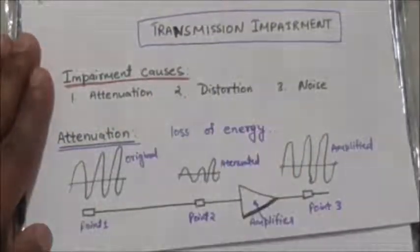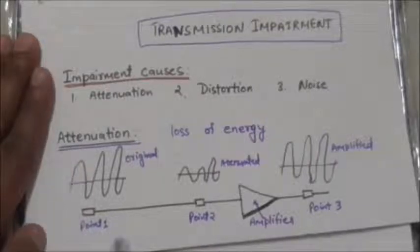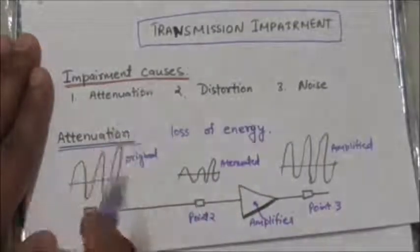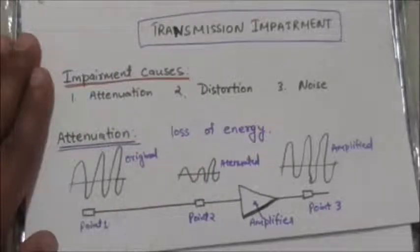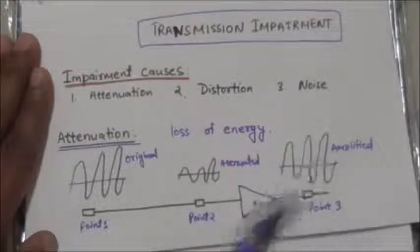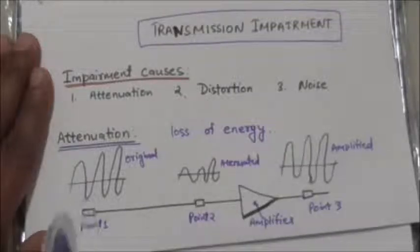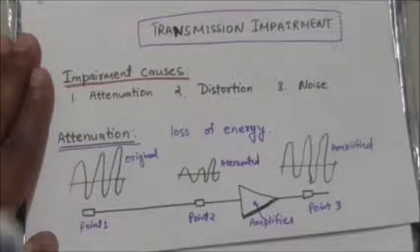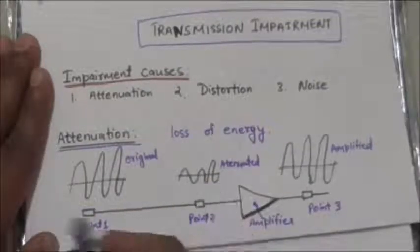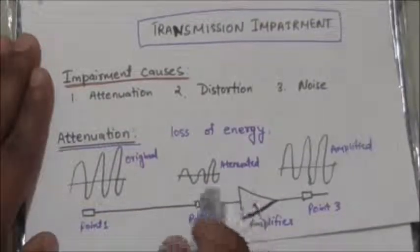First, we will study about attenuation. Attenuation means loss of energy. When a signal, whether simple or composite, travels through a medium, it loses some of its energy in overcoming the resistance of the medium. To compensate for this loss, amplifiers are used to amplify the signal.